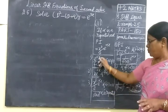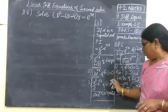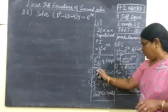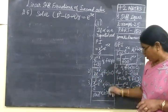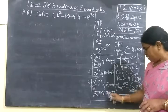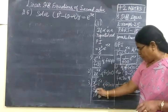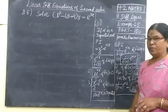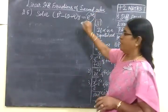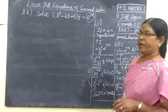Here e^(αx) by f(d). 0 means x into e^(αx). 0 and if alpha is repeated, means you are writing x² by 2 e^(αx), provided in the e^(αx).